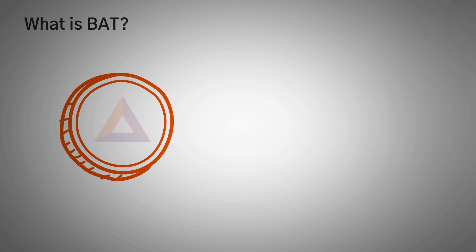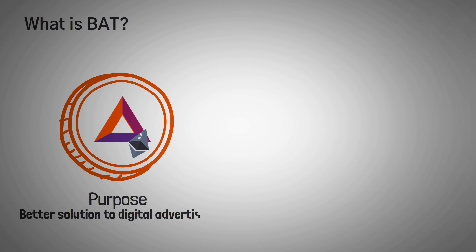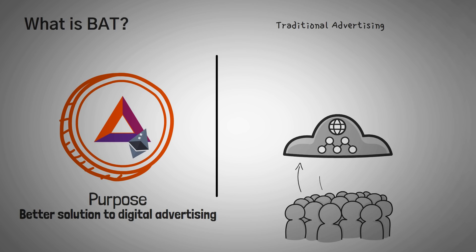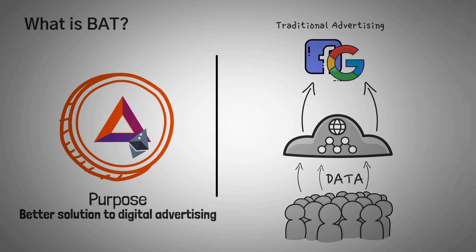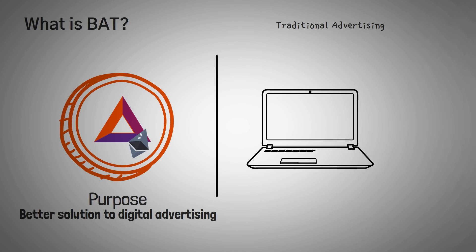What is the Basic Attention Token? The Basic Attention Token is the native utility token of the Brave browser, and it is simply just an Ethereum token. Its purpose is to provide a better solution to digital advertising using a blockchain model. Traditional advertising focuses on tracking users' online data, packaging it up, and then selling it to the highest bidder. Facebook and Google are widely known for this, mostly because they have the most popular products that allow them to actually track their users.